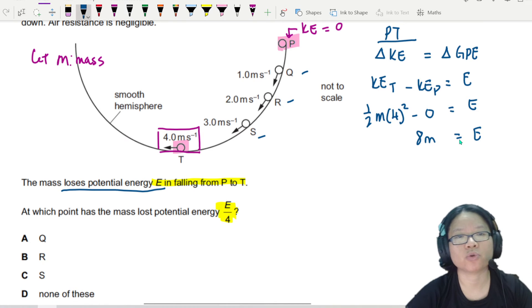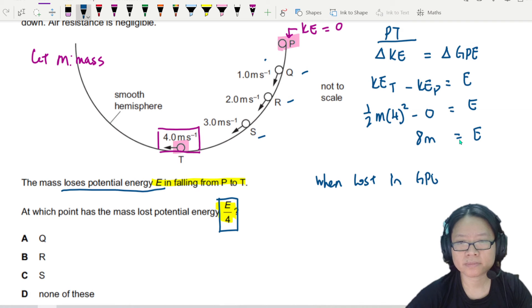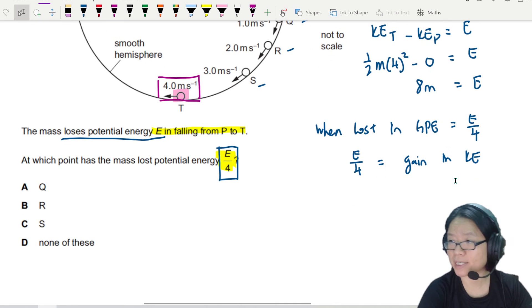But now we kind of need to know whether when it decreases from E over 4, which point is it? Is it S? Is it R? Is it Q? Or is it none of the above? So assuming that the change in GPE is E over 4, when the loss in GPE is equal to E over 4, I can say that this loss E over 4 is equal to gain in KE. So the loss in this GPE is the gain in KE.